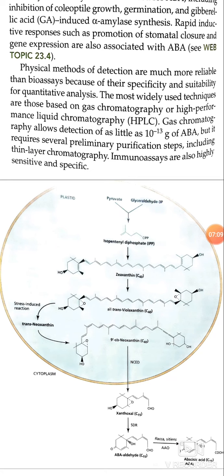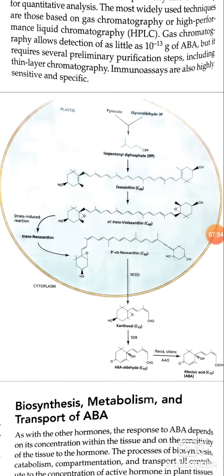In the biosynthesis process of abscisic acid, the precursor forms in plastids and is then transported to the cytoplasm, where it is converted to abscisic acid via abscisic acid aldehyde.